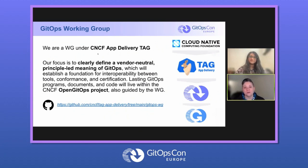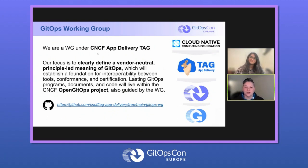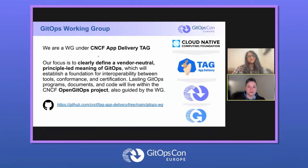The GitOps working group lives within the Cloud Native Computing Foundation's Technical Advisory Group for Application Delivery, also known as the CNCF TAG App Delivery. For those who may be unfamiliar with the working groups and TAGs, CNCF TAGs oversee and coordinate interests of specific areas for end users and projects. With TAG App Delivery, focusing on projects and initiatives related to delivering cloud native applications, including building, packaging, deploying, managing, and operating them. Our focus within the GitOps working group is to clearly define a vendor-neutral, principle-led meaning of GitOps.